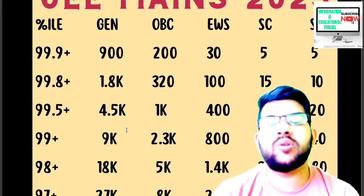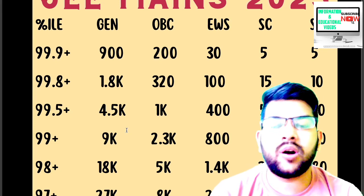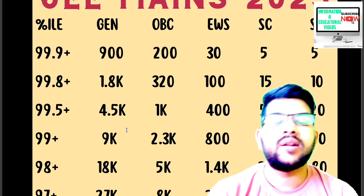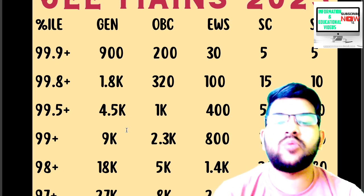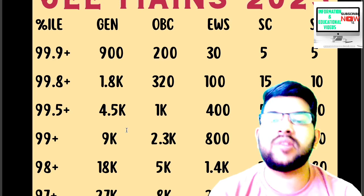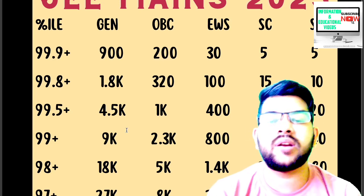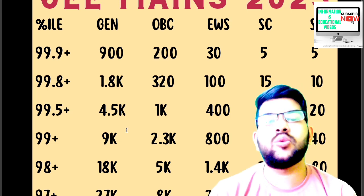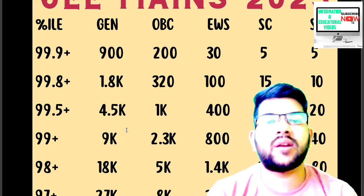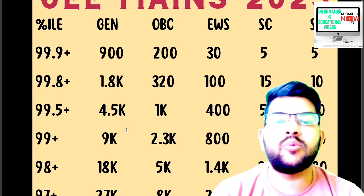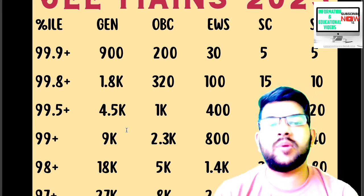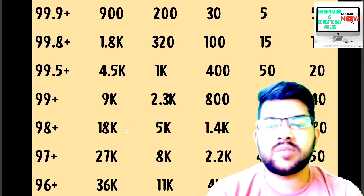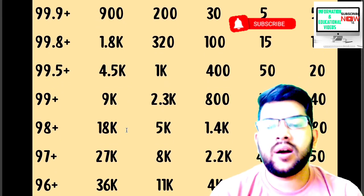One more very important piece of information: if you are appearing in JEE 2023 or any future year, along with your category rank you will also get a CRL rank. CRL means the general rank. If you are a general candidate you will get only the CRL rank. If you are from OBC, you will get both the OBC rank and the general rank. For PWD students, I will be providing a separate video on this channel.